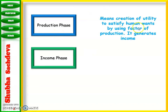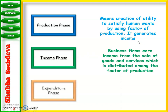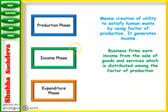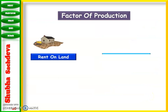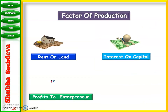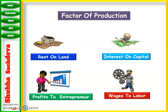The production phase means creation of utility to satisfy human wants, and income is generated through factors of production. The income phase is when business firms earn income: land earns rent, labor earns salary and wages, capital earns interest, and entrepreneurs earn profit. After the income phase, households spend their income to satisfy their various wants — this is the expenditure phase.